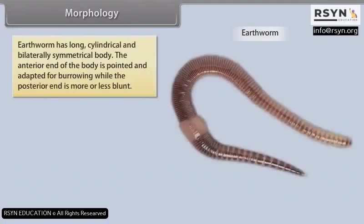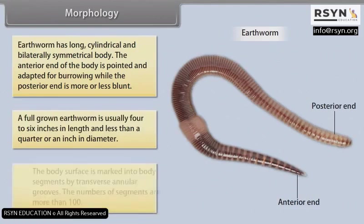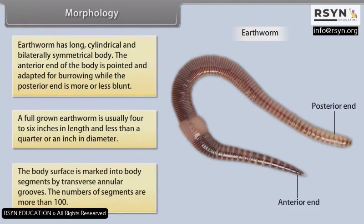Morphology: The earthworm has a long, cylindrical and bilaterally symmetrical body. The anterior end is pointed and adapted for burrowing, while the posterior end is more or less blunt. A full-grown earthworm is usually 4–6 inches in length and less than a quarter inch in diameter. The body surface is marked into segments by transverse annular grooves, with more than 100 segments.